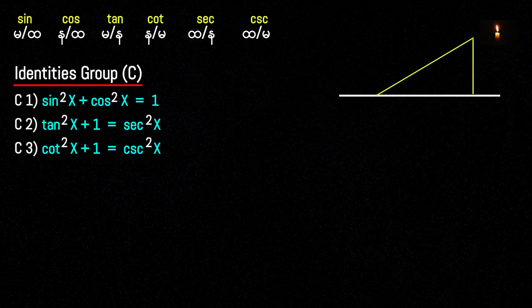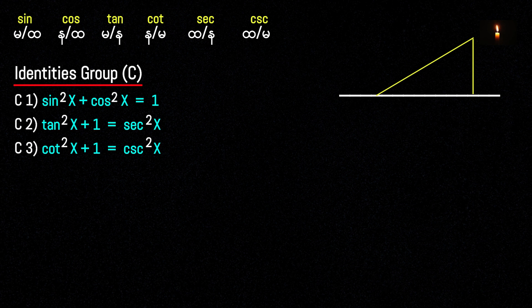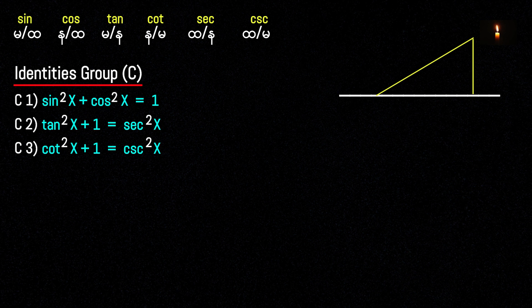Group C is divided into C1, C2, and C3. C1 means sin squared plus cos squared equals 1. So sin squared plus cos squared equals 1.